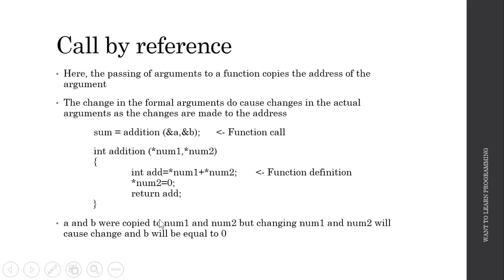So a and b were copied to num1 and num2, but changing num1 and num2 will cause change in a and b and b will be equal to 0 now according to this condition. The only thing to remember is that the change is happening to the address of b and not to the copy of b.